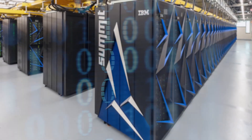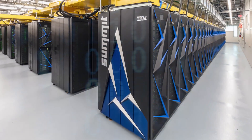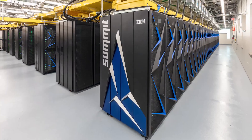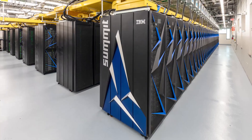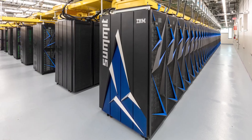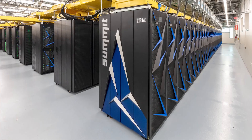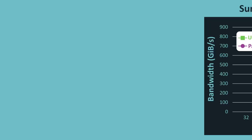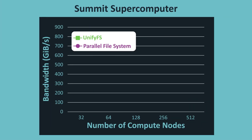UnifyFS is already being used with a variety of HPC systems and applications. For instance, on the Summit supercomputer at the Oak Ridge Leadership Computing Facility, we have seen up to an 18 times speedup compared to using the parallel file system when running across 512 nodes.